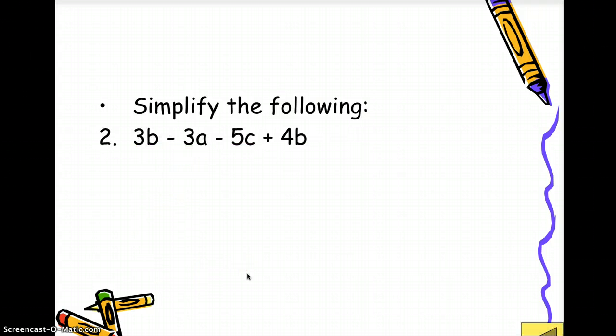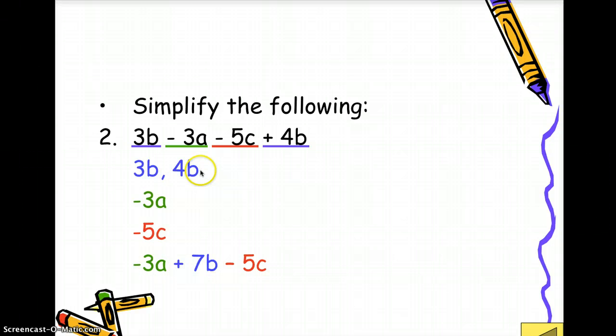Another example. Let's find similar terms, 3b to 4b. You have it there, one group. So negative 3a by itself, negative 5c by itself. Then we just write it. Negative 3a by itself plus 3b plus 4b is 7b minus 5c.